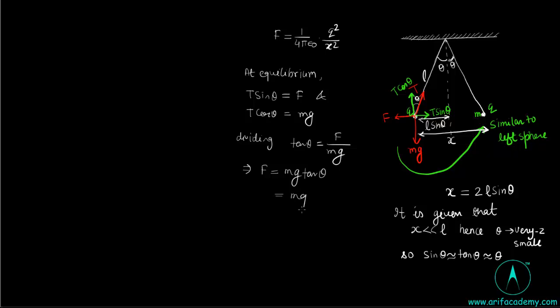Since theta is small, tan theta will be replaced by sin theta. And sin theta equals X by 2L, we can write sin theta as X by 2L.